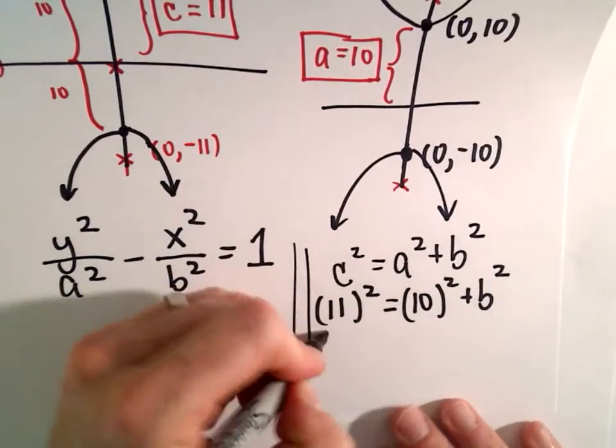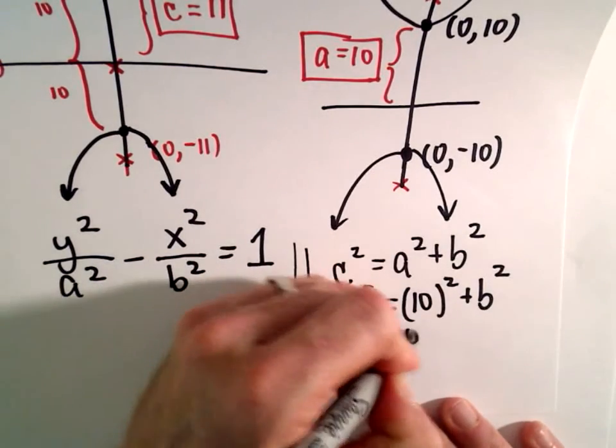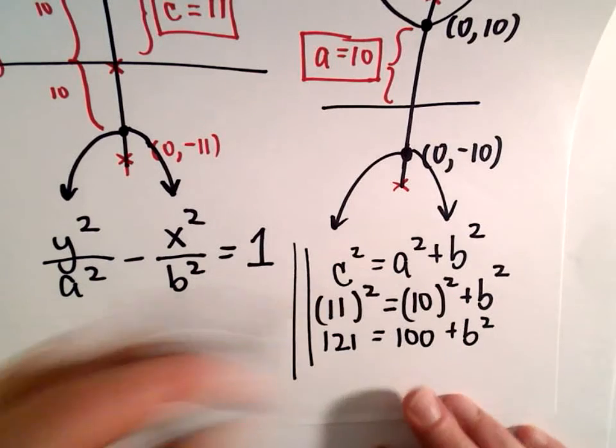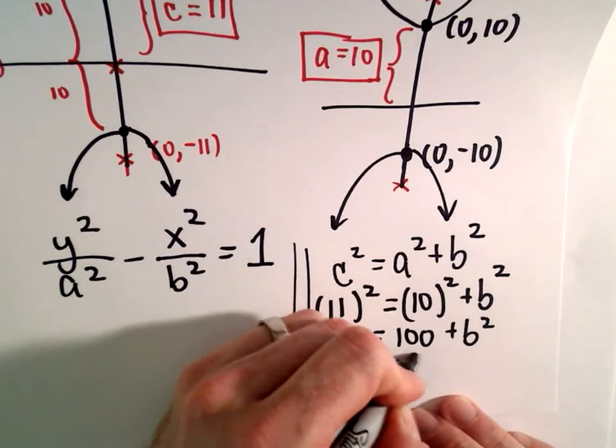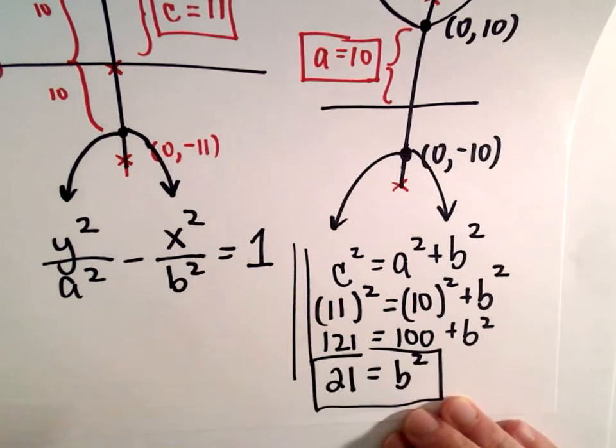Well, 11² is 121. 10² is 100. We can subtract 100 from both sides and get 21. That'll be our value for b².